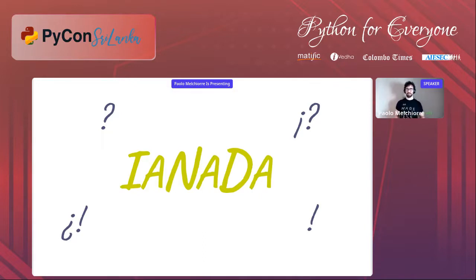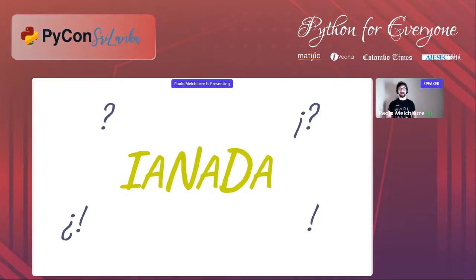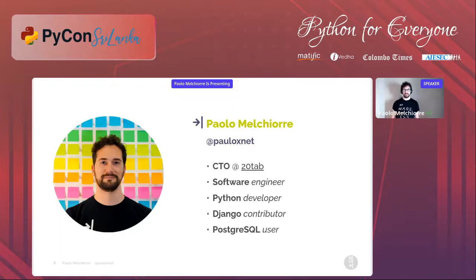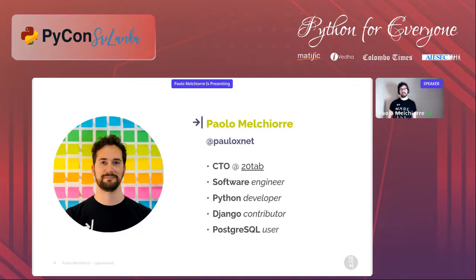I would like to underline that I'm not a database administrator. So who am I? I'm Paulo Melchiorre, the CTO of 20tab, a Pythonic software company for which I work remotely. I'm a software engineer and longtime Python backend developer. After using Django for a few years I became a contributor to the project. I also use PostgreSQL as a database for all my Django projects.